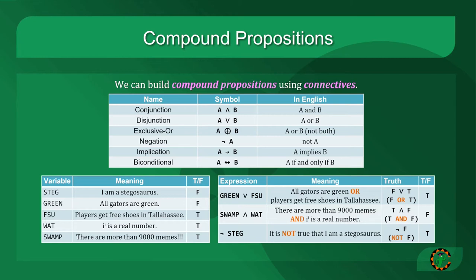Swamp conjunction what can be read as there are more than 9,000 memes and I to the I is a real number. This is the conjunction of a true and a false value. But for the conjunction to be true, both statements must be true, so this compound proposition is false.